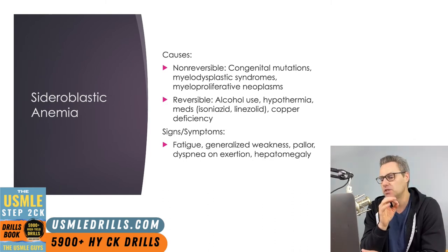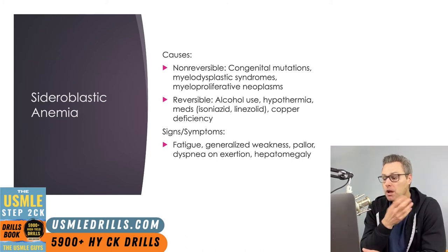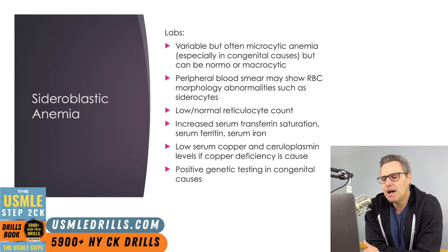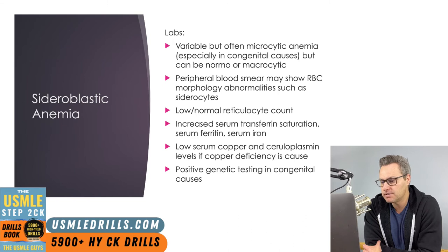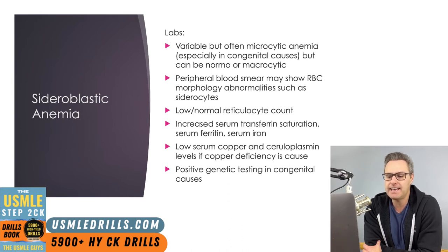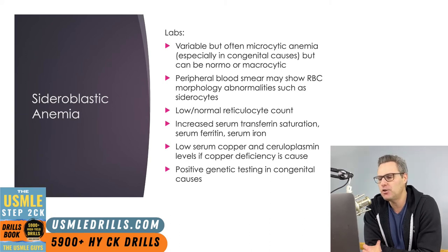Symptoms include the same anemia symptoms we've covered — fatigue, generalized weakness, pallor, dyspnea on exertion — plus hepatomegaly as a result of iron buildup in the liver. Labs depend on the underlying cause, but sideroblastic anemia is typically microcytic in most congenital cases. The peripheral blood smear may show RBC morphology abnormalities such as siderocytes, and if siderocytes are present, this is pathognomonic for the disease.